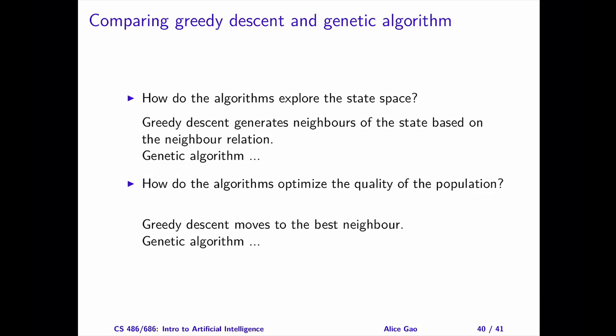For exploration, a local search algorithm relies on the neighbor relation to explore the search space. However, the neighbor relation for greedy descent and the genetic algorithm look quite different. For greedy descent, the definition of the neighbor was relatively straightforward. For the genetic algorithm, the neighbor relation is a randomized process consisting of crossover and random mutation — starting with two states in the current population, the genetic algorithm produces a new state by crossover and modifies it with a small probability using random mutation.